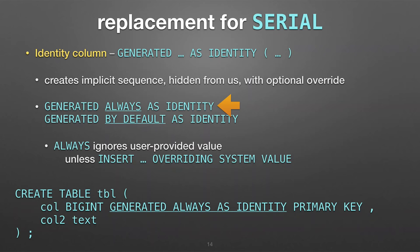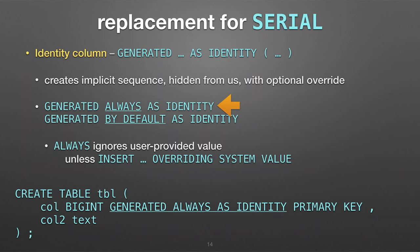The replacement for all of this is 'generated as identity.' It's still using the same sequence technology underneath — it's the same sequence feature that Postgres has — but what they're doing is tying it to the table now, so it's acting more like a real property on the table. There are two versions: 'generated always' and 'generated by default.' The issue has to do with sometimes some programmers might want to pass in a value instead of letting it be generated by the sequence — sometimes you want to override that.